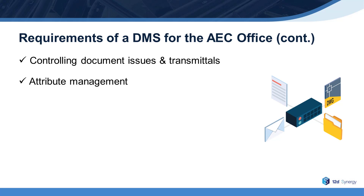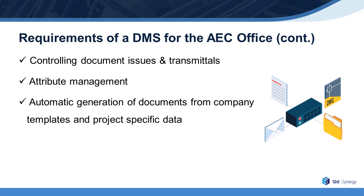Attribute management: besides managing documents, the DMS should also be able to manage project attributes or data — for example, project number — which can then be used in drawing title blocks, cover sheets and reports. The ability to manage data can facilitate the automatic generation of documents around company templates and project-specific data. For example, project-specific data such as the name of the council, the water authority, and an estimated finish date. If the finish date is varied, the DMS should be able to propagate this new information through all documents that reference this data.